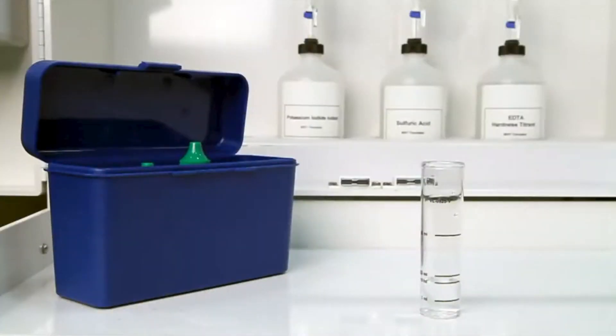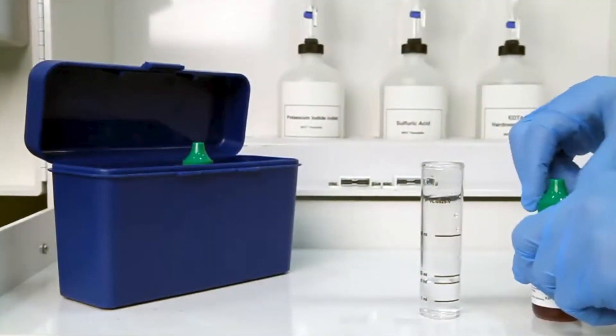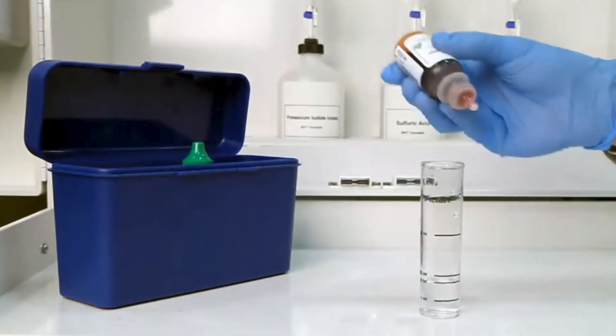The next step according to the EndpointID procedure is to add eight drops of ferro and indicator. The bottle contains a dropper tip, so it's important to hold the bottle vertically to get a consistent drop size.